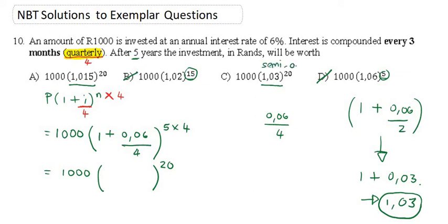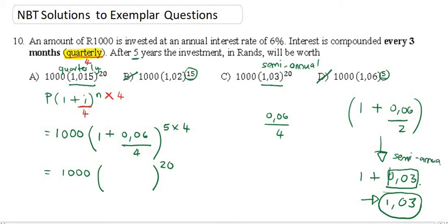But we're not working with semi-annual, we are working with quarterly. So yes, the answer is A, but why is it A? It's not 0.03, which represents semi-annual. It is half of 0.03. 0.03 is the same as 0.030. What is half of 30? 15.